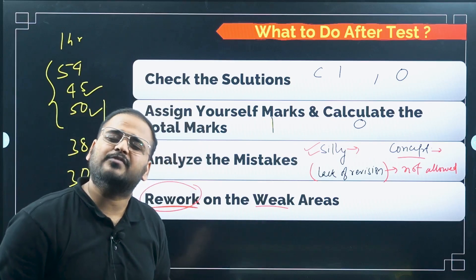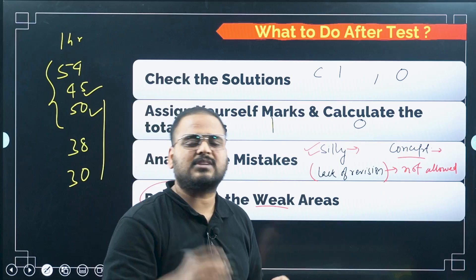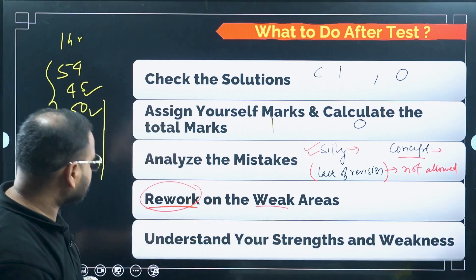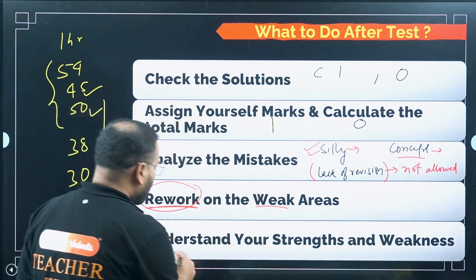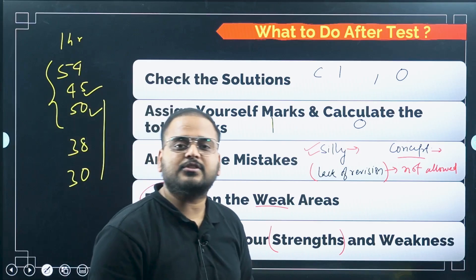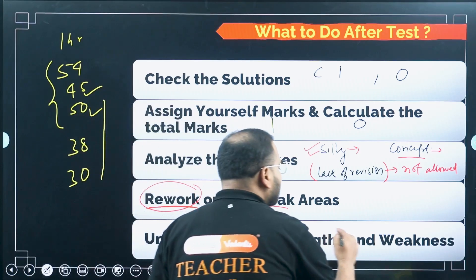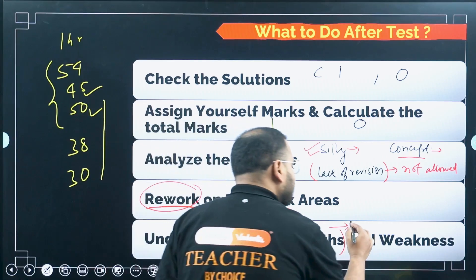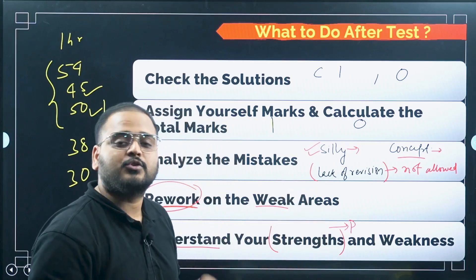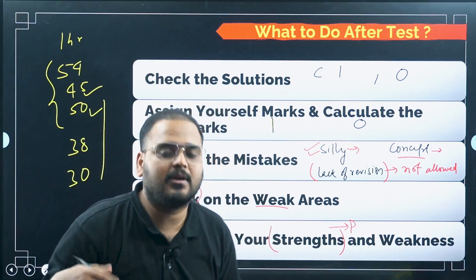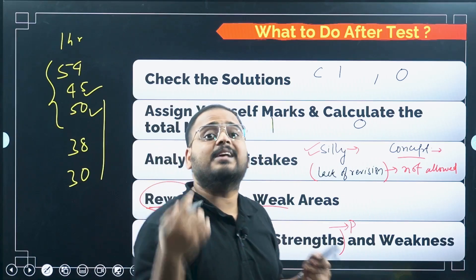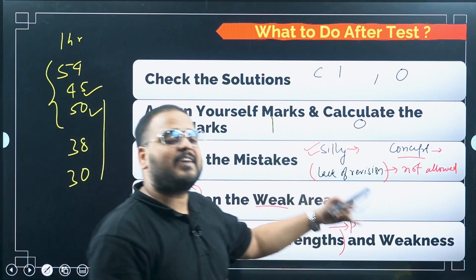How will you work on it? If it's very bad, start from NCERT. If it's okay, start with the concepts only, revise them again, and then directly start KCET problems. Also, you should know your strengths. If you're good at, say, probability — don't stop solving those questions. Instead, try to solve them as fast as possible. If you're good at permutation and combination, keep working hard so that your time per question in P&C keeps getting less and less.